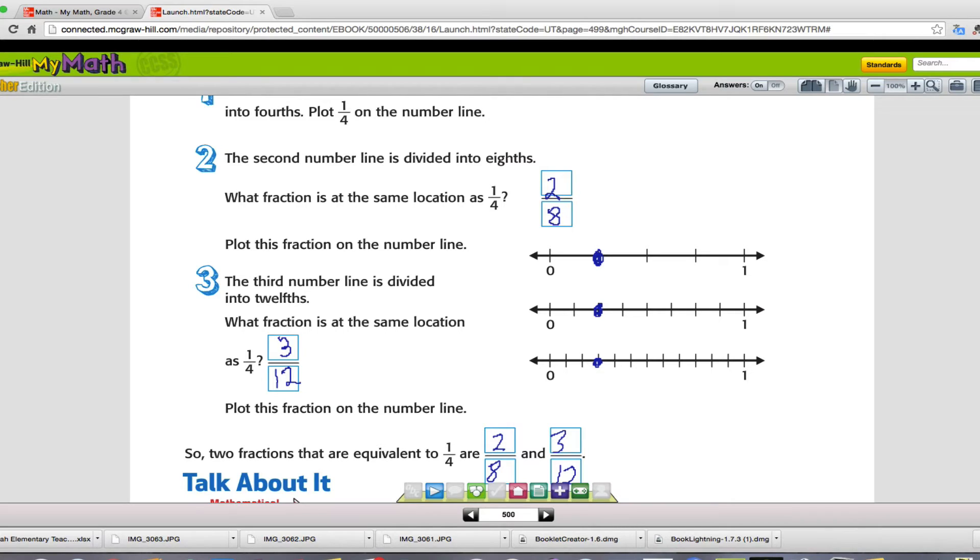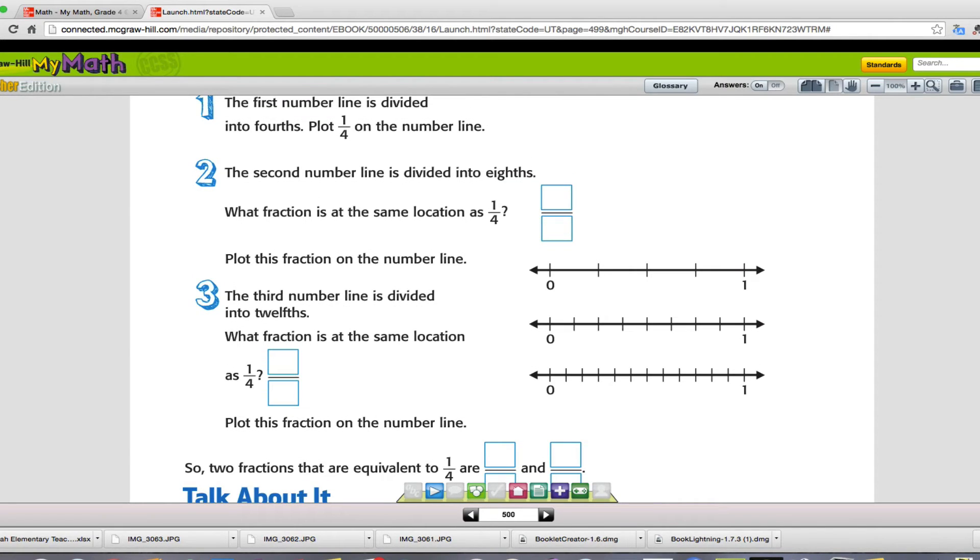I need to clear this off real quick. Okay. On the next page, let's scroll up so we can see the top. It says the first number line is divided into fourths. Plot 1/4 on the number line.